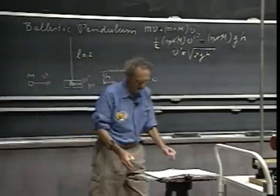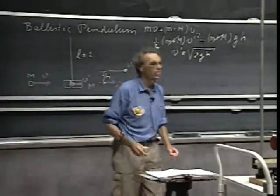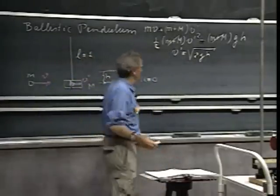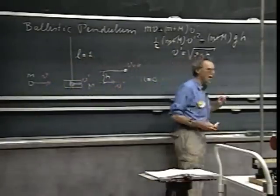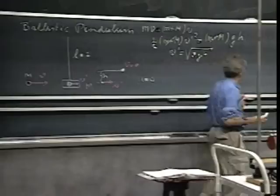We lose the (m + M), so v prime equals the square root of 2gh, and all you have to do is measure h, and then you know v prime, and from v prime you know the speed of the bullet. But life is not that simple — it's very difficult to measure h, and I can make you see that.